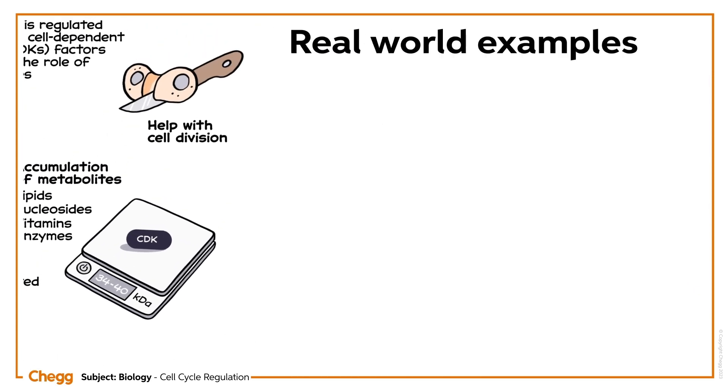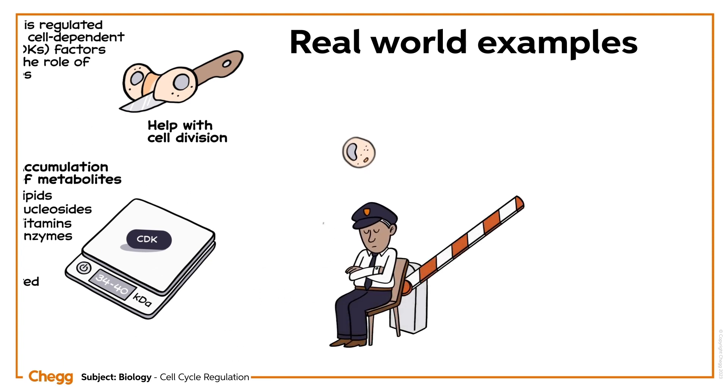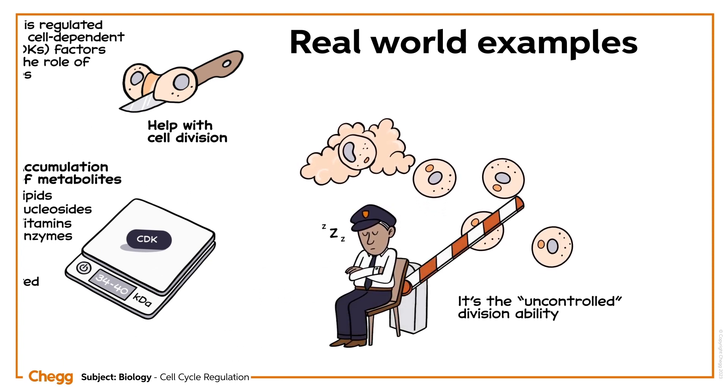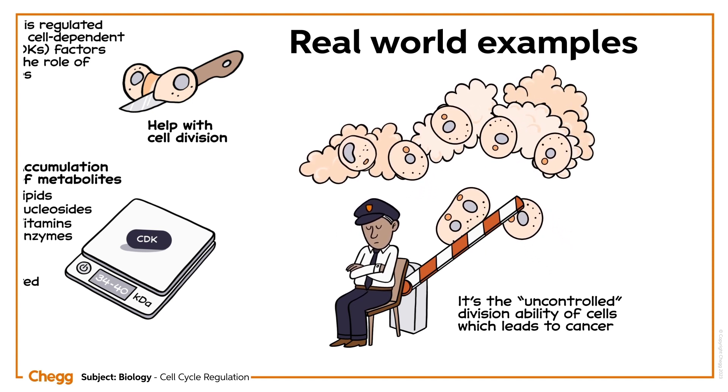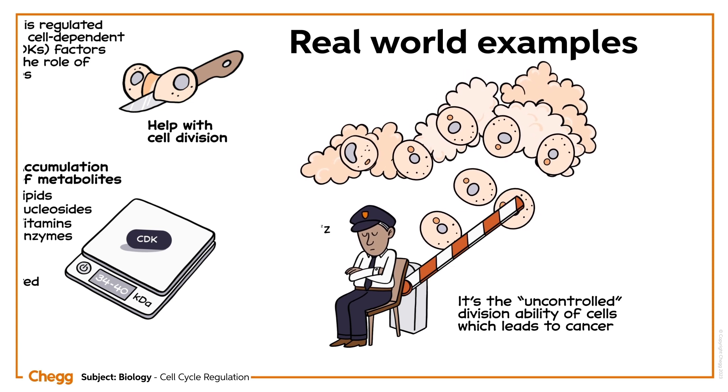Now we know what is common in every type of cancerous cell. It's the uncontrolled division ability of cells which leads to cancer. Any one or many regulatory checkpoints in the cell division process are affected in such cases.